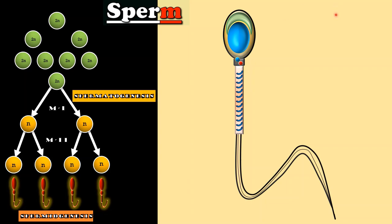Alright, this sperm is 60 micrometer in length and 3 micrometer broad. It is divided into 4 parts namely, head, neck, middle piece and tail.